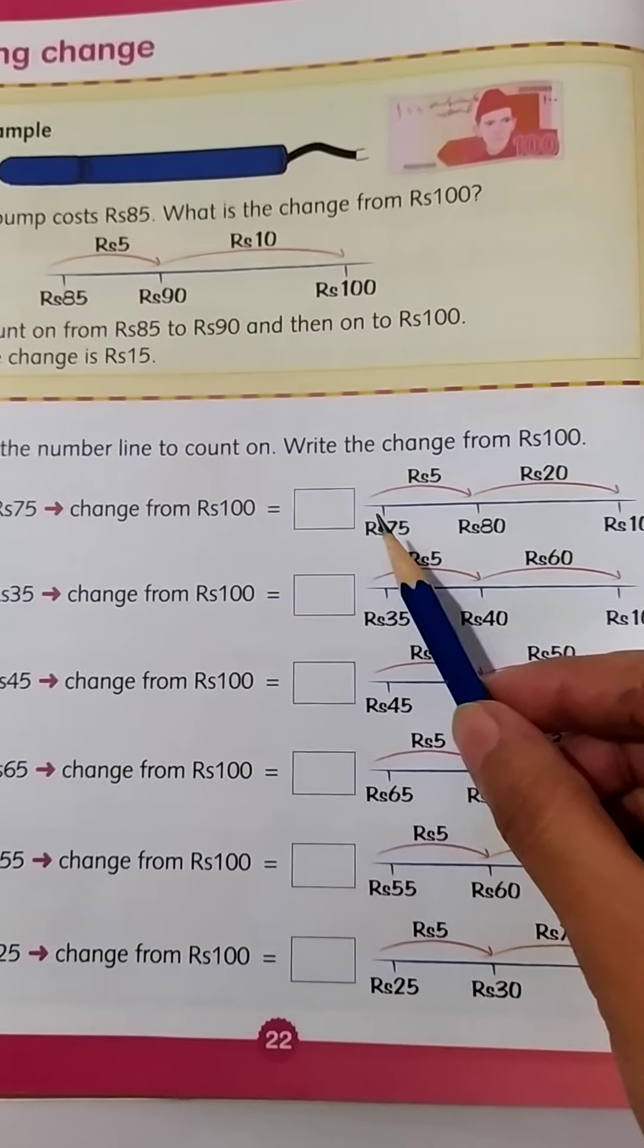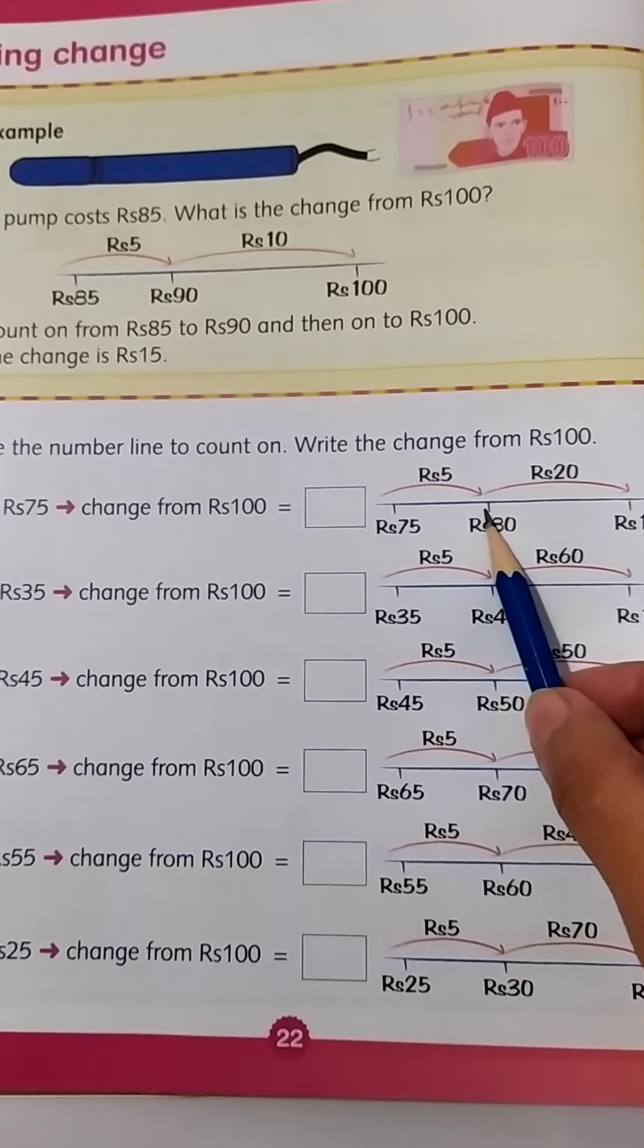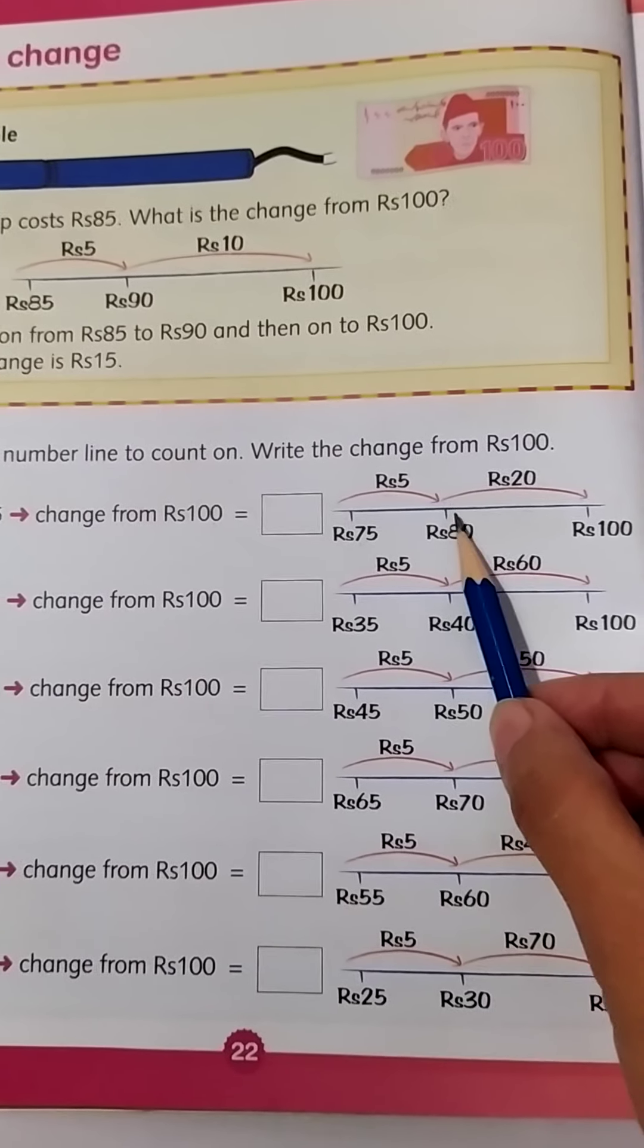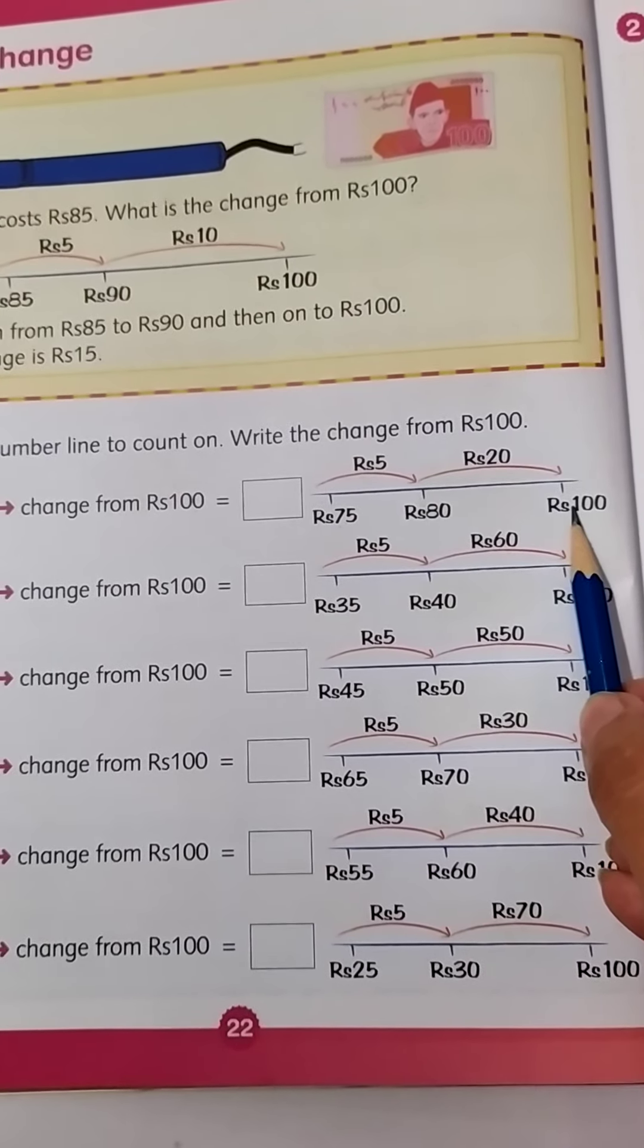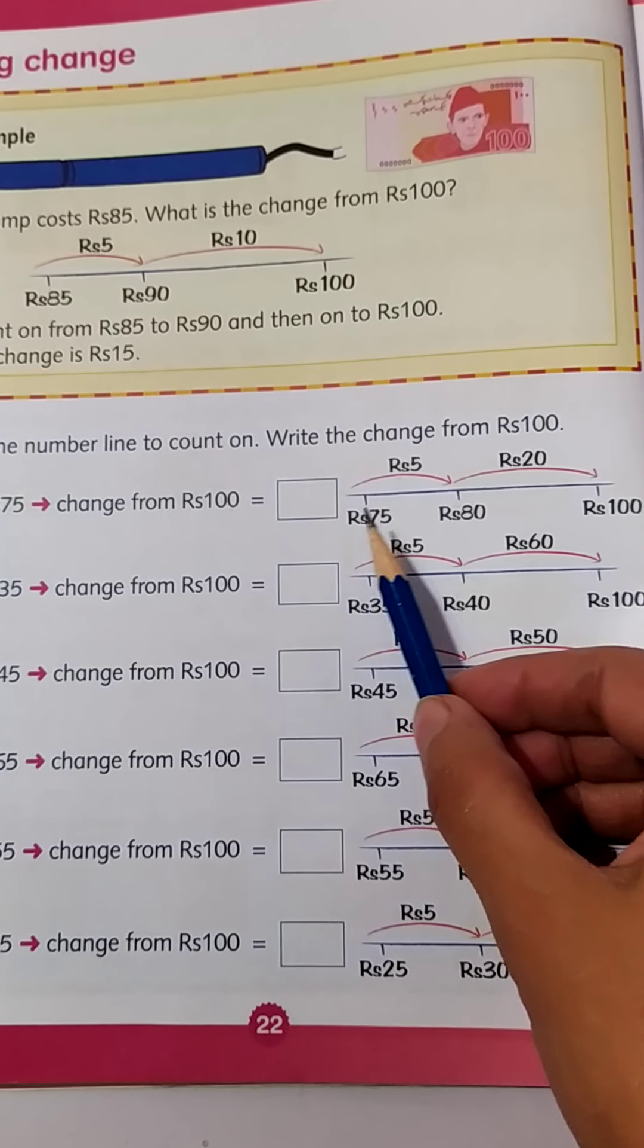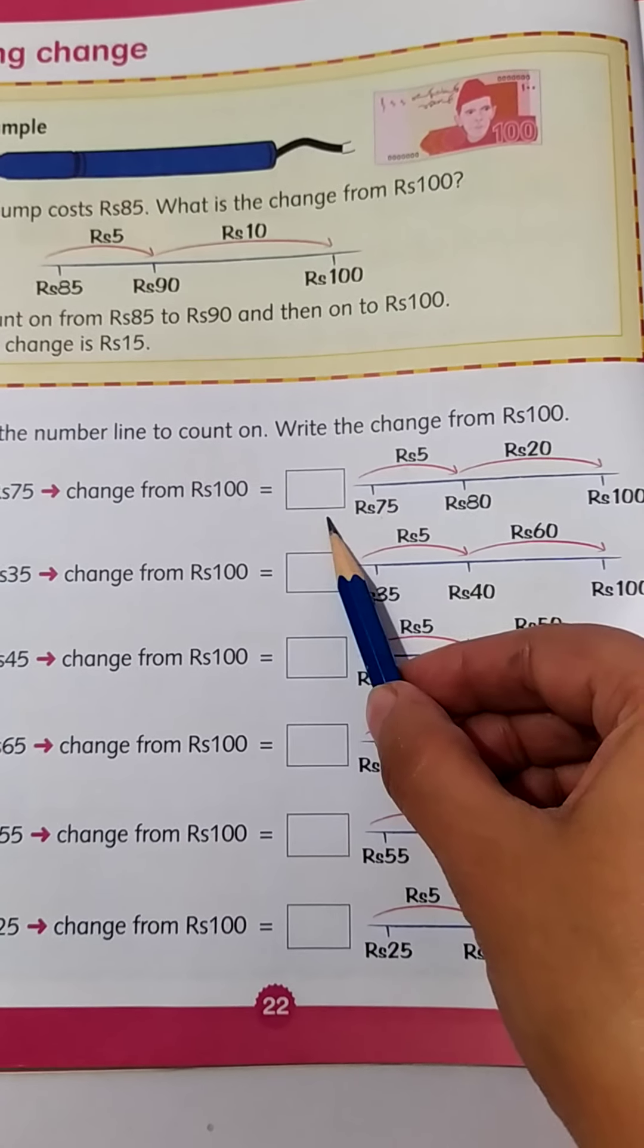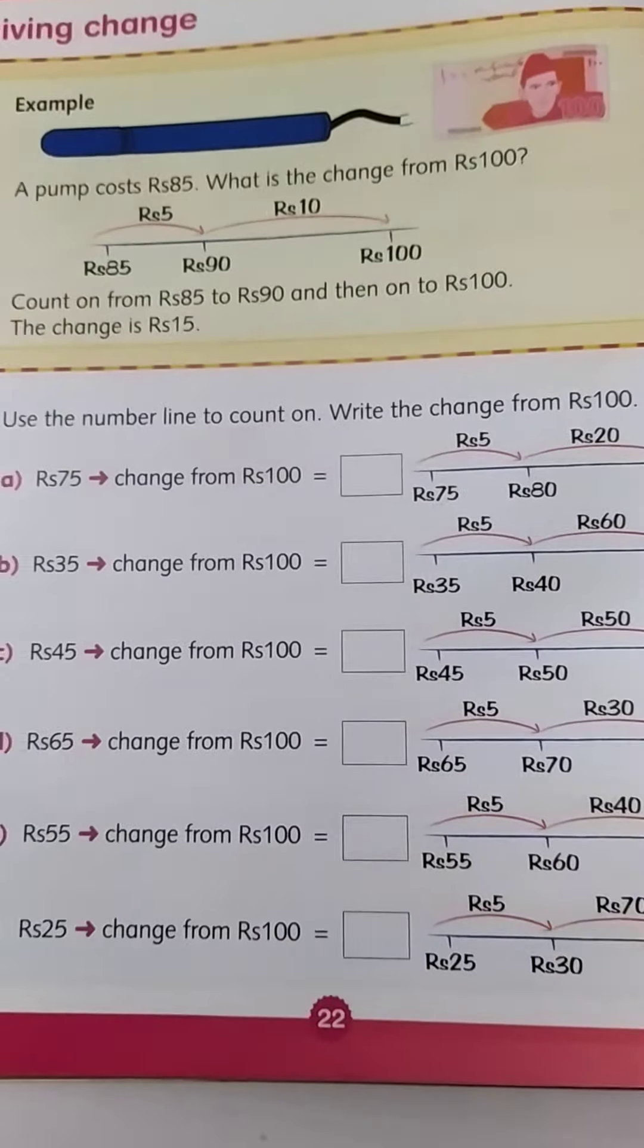And which coin we can add to make it 80? Yes, 5 rupee coin. So 75 plus 5 is 80, and 80 plus 20 is 100. So what you have to write here? You have to write 25. You are going to give your mama 25 rupees back. 20 plus 5 is 25, so you will write 25 like this.